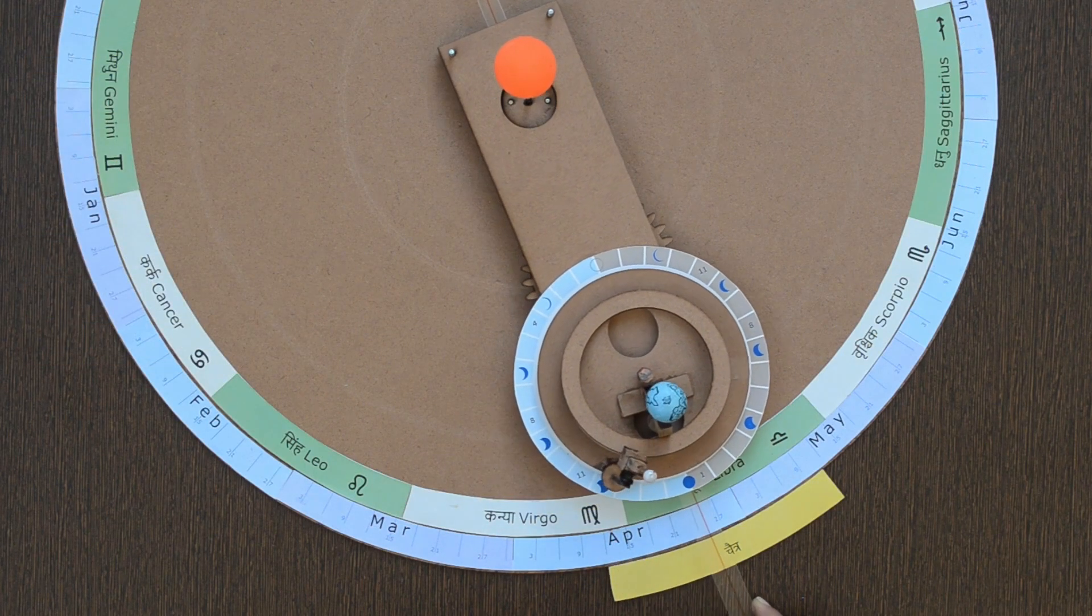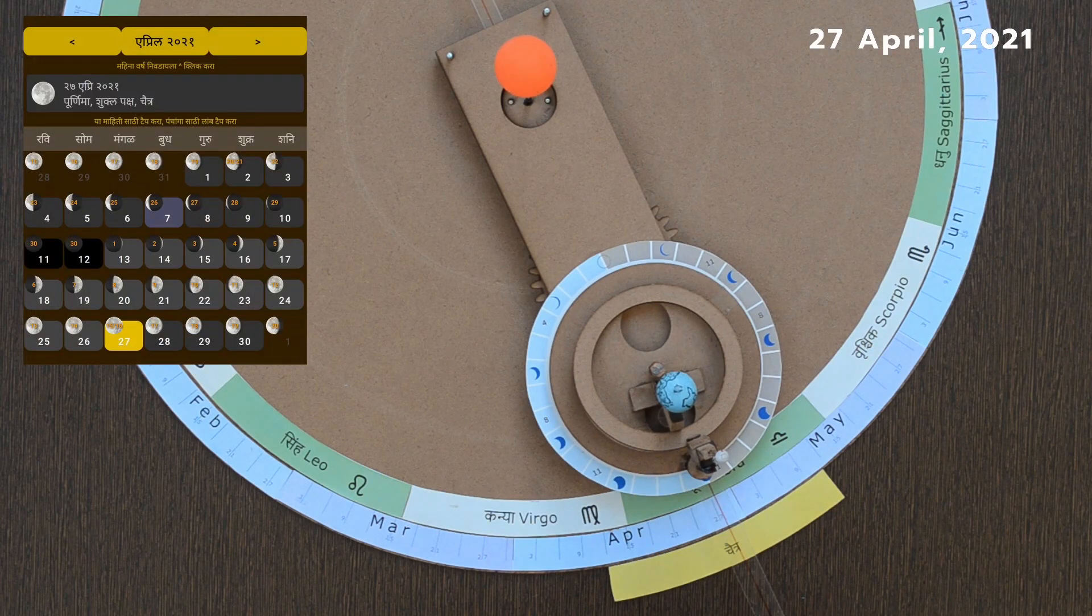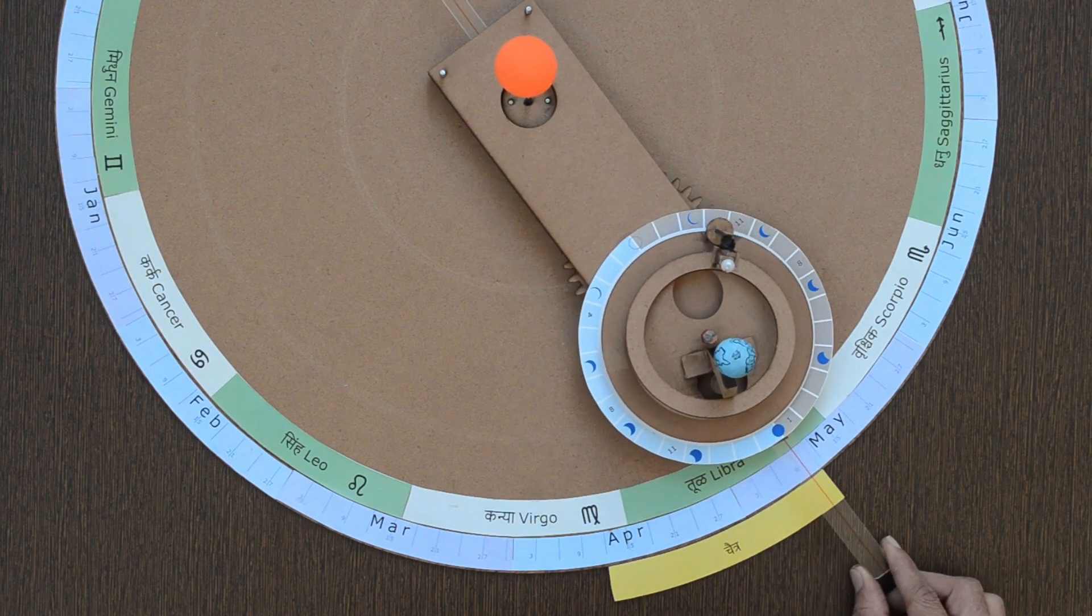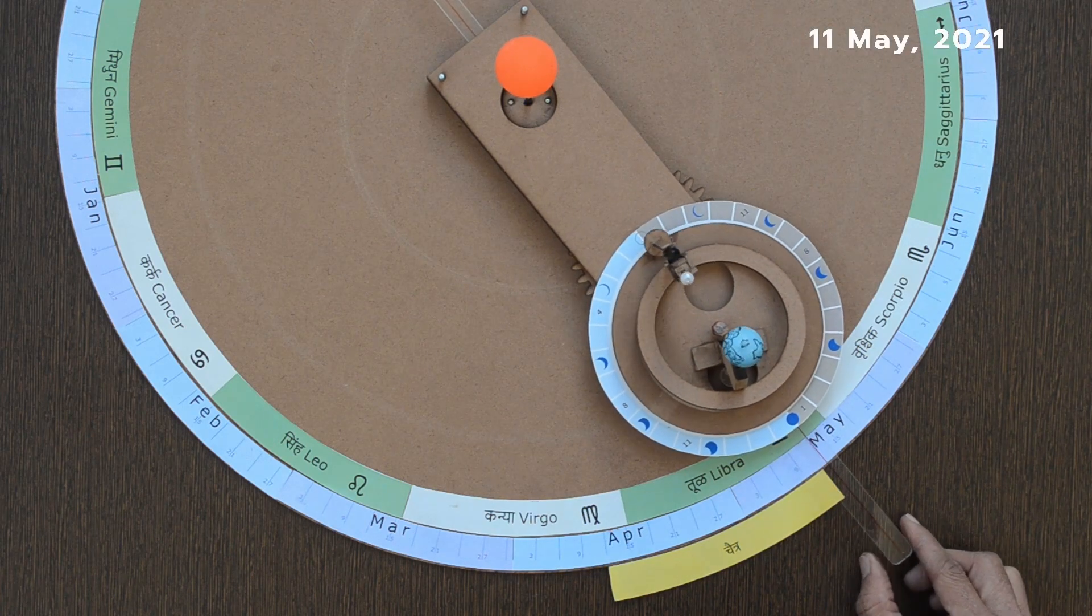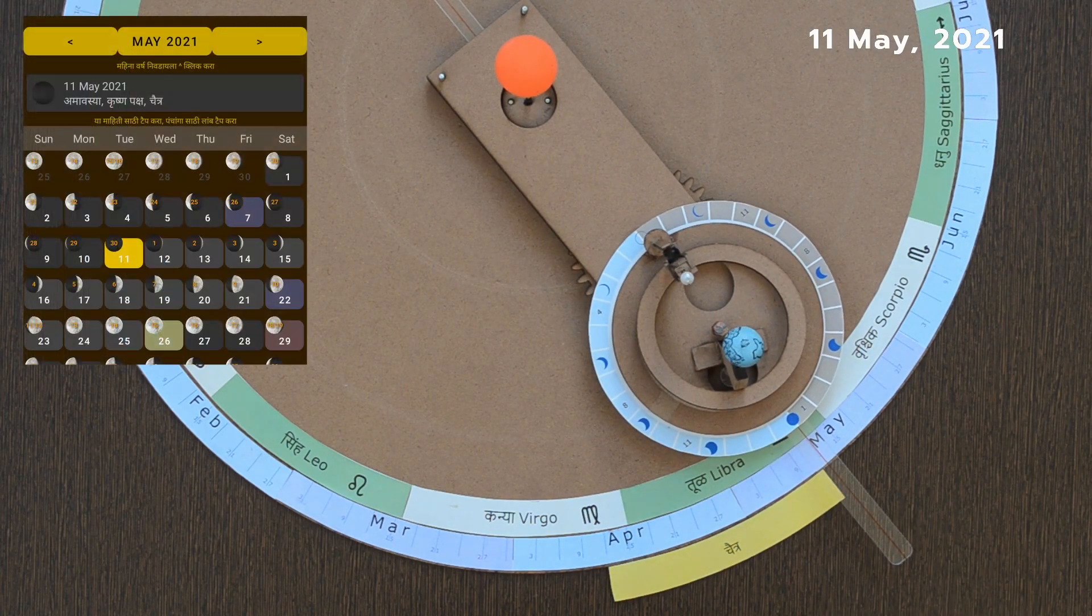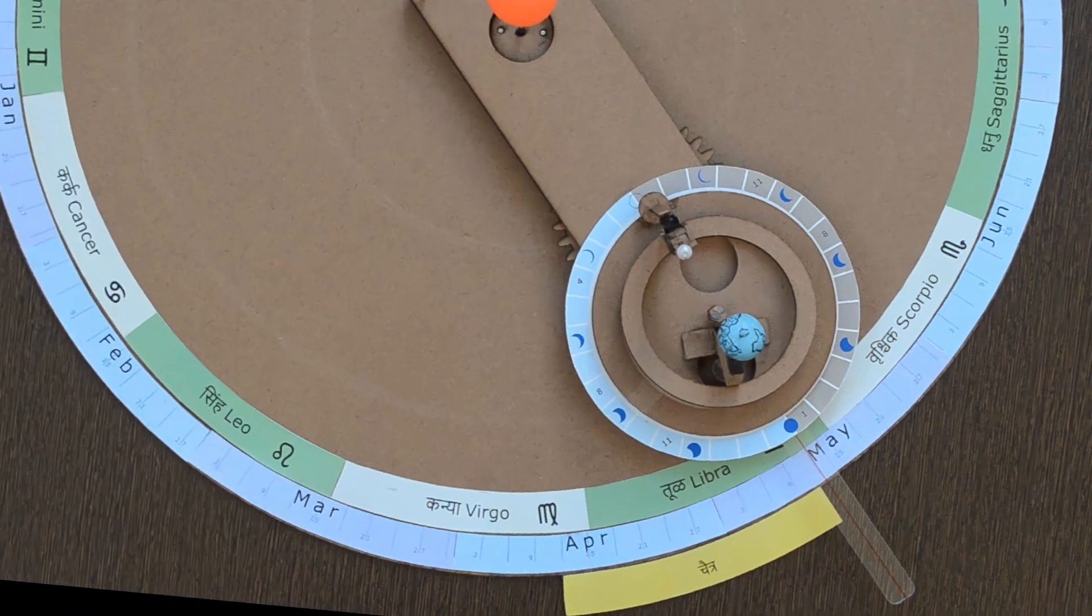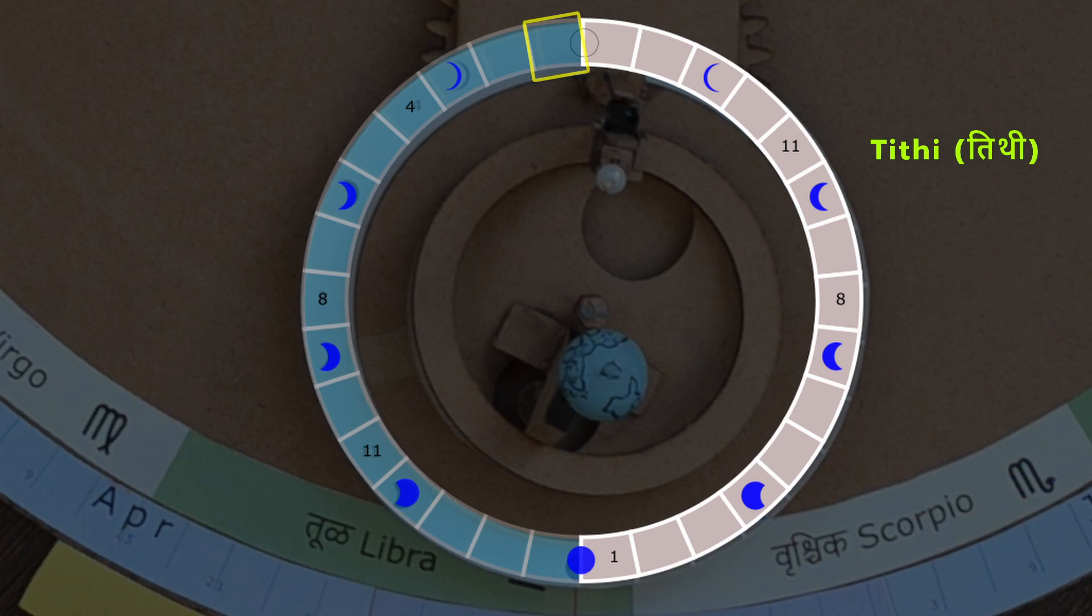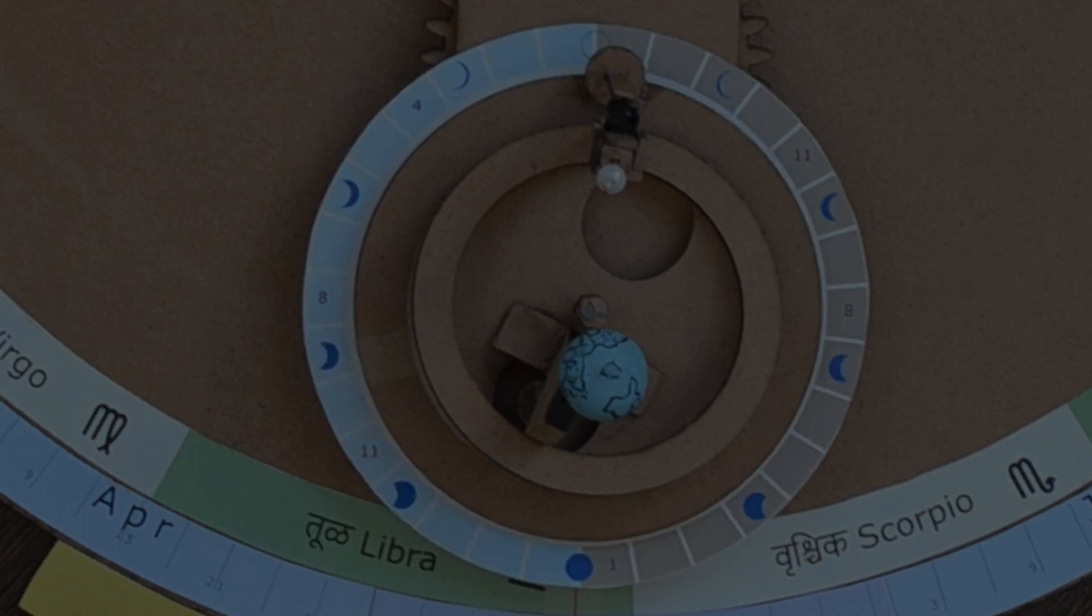There is a full moon or Purnima on 27th April, and Amavasya or new moon on 11th May, marking the end of first month Chaitra. Each month of the Hindu calendar has 30 days. Each day is also called as Tithi. But how is duration of the day decided?